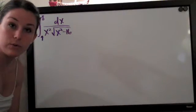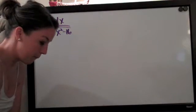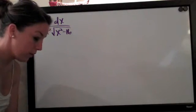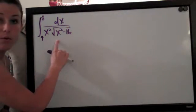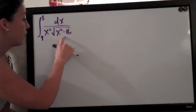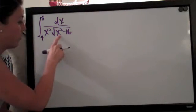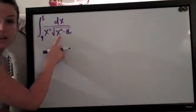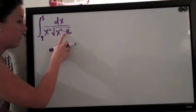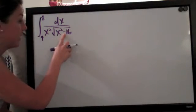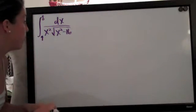The first thing we want to do with trigonometric substitutions is determine which substitution we're going to use. We look at what we have under the radical — x squared minus 16 — to see whether x is the first or second term and whether we have a plus or minus sign, because that determines what kind of substitution we perform.